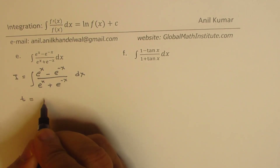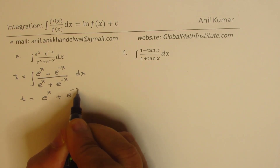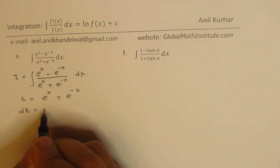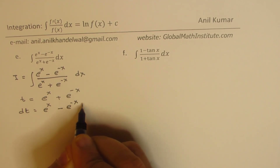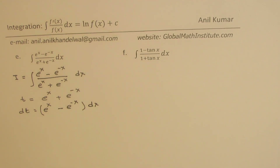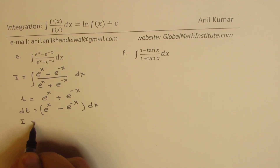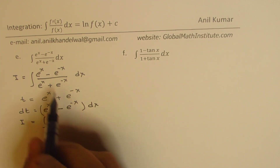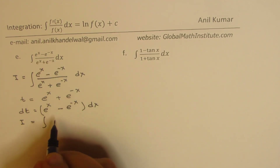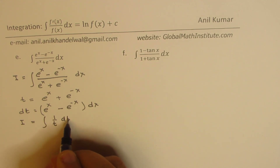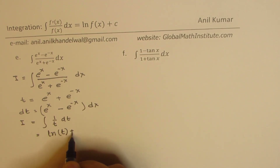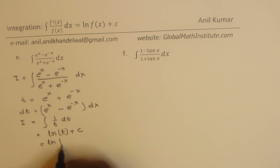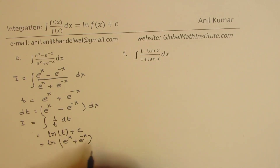The denominator's derivative is the numerator. We substitute t = eˣ + e⁻ˣ, so dt = (eˣ − e⁻ˣ) dx. Therefore we can write the integral as 1/t dt, which equals ln t + c — that is, ln(eˣ + e⁻ˣ) + c.